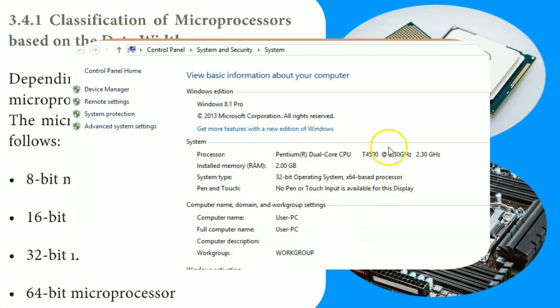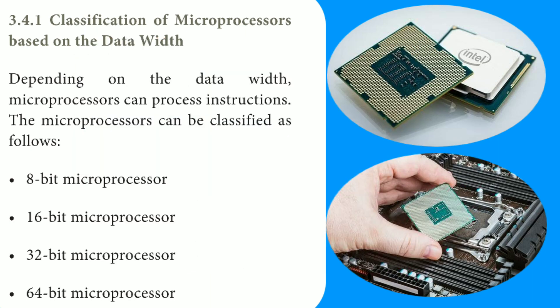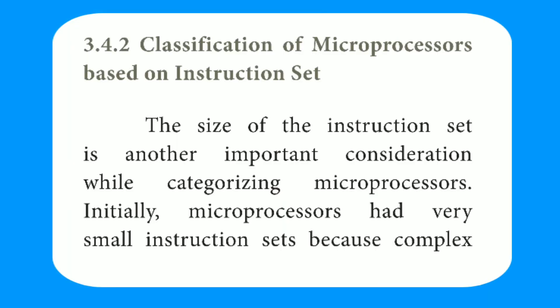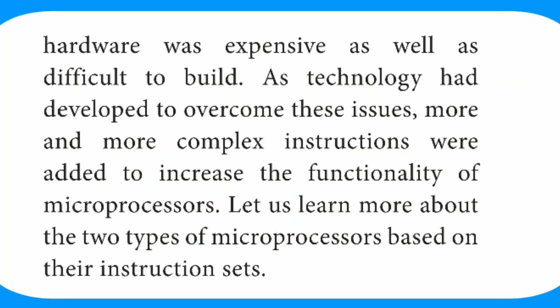The classification of microprocessors based on instruction set: the size of the instruction set is another important consideration when categorizing microprocessors. Initially, microprocessors had very small instruction sets because complex hardware was expensive as well as difficult to build. As technology developed to overcome these issues, more and more complex instructions were added to increase the functionality of the microprocessor.